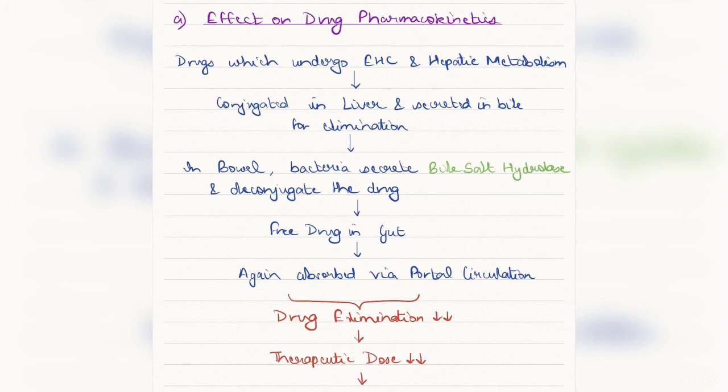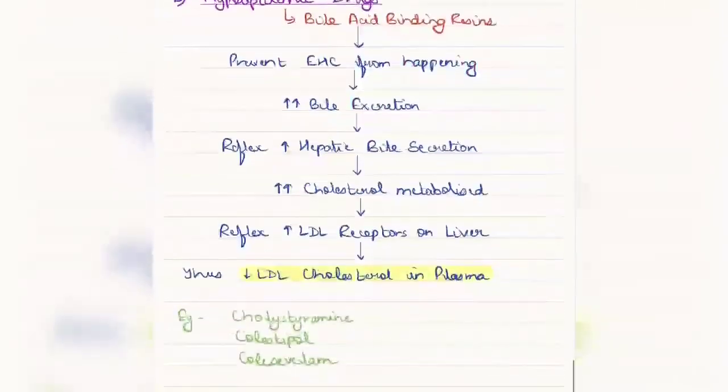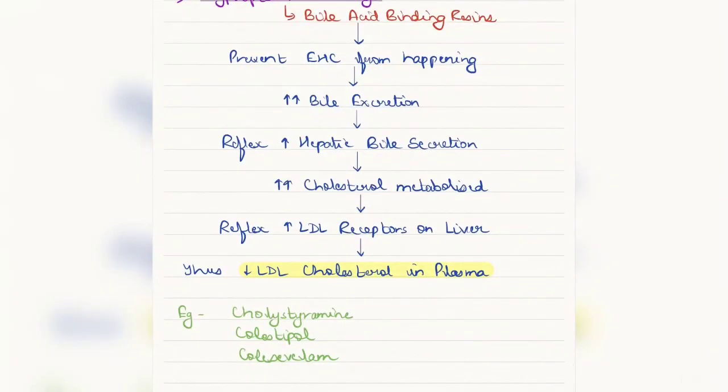There are many drugs which undergo enterohepatic circulation, but some of the major drugs are non-steroidal anti-inflammatory drugs, digoxin, and warfarin. The next clinical aspect is the hypolipidemic drugs. In hypolipidemic drugs, there are many subclasses, but the one which are known as bile acid binding resins is related to enterohepatic circulation.